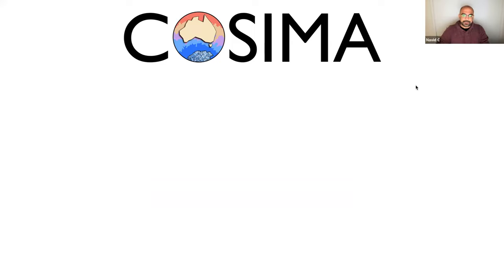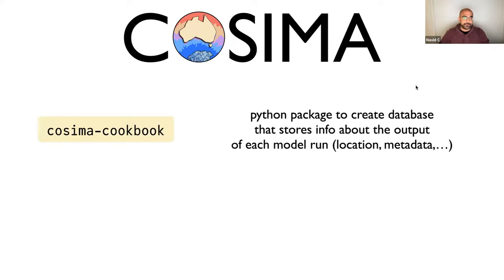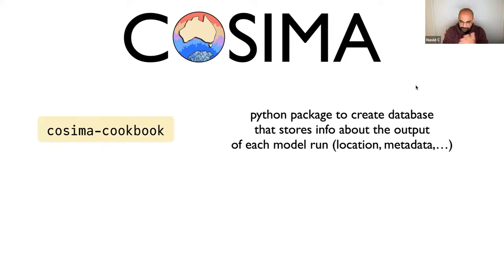There are two tools we have developed in COSIMA. The first is a Python package we call the COSIMA Cookbook. It's essentially a database — a way to store information about where all our model output is on the supercomputer.